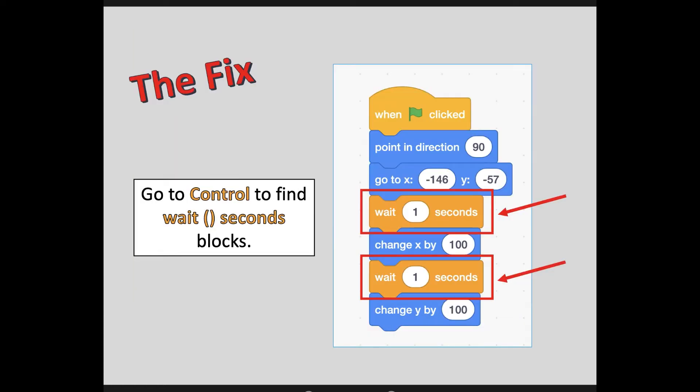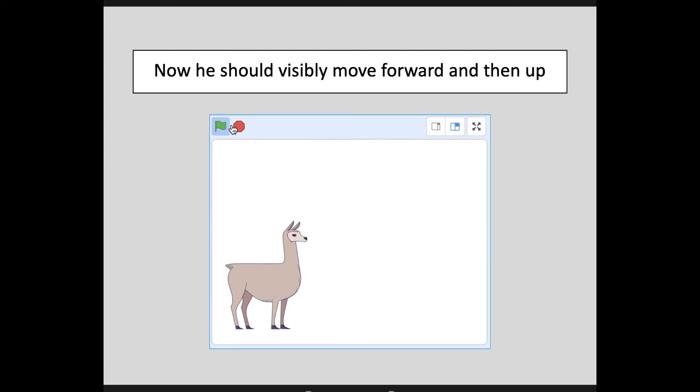To fix this, go to your list of control commands and find the wait seconds block. The waits will already have a one in the box, meaning the computer will wait one second before moving to the next code block. But you can change the number to be anything you want — even less than one second, you can put in a decimal. For what we're doing right now, add a wait right before we change the X coordinate and right before we change the Y coordinate. Now he's going to visibly move forward and then up.